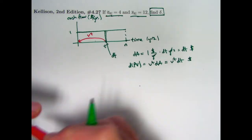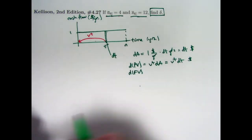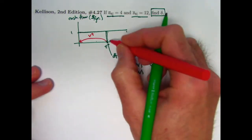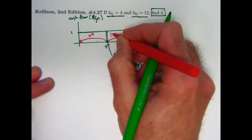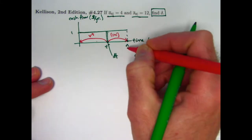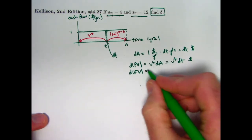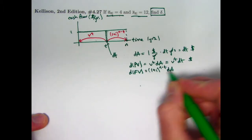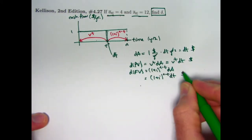We also are going to want to think about future value in this video. What's the tiny future value of that tiny amount of money paid out over a short amount of time, dt, starting at time t? I need to promote that in time to time n by multiplying by the growth rate, 1 plus i, raised to the amount of time I'm promoting it in time. That's not t years, that's n minus t years, so the power here is n minus t. So I get 1 plus i to the n minus t dA, which will be the same thing as 1 plus i to the n minus t dt, and that will be in dollars as well.